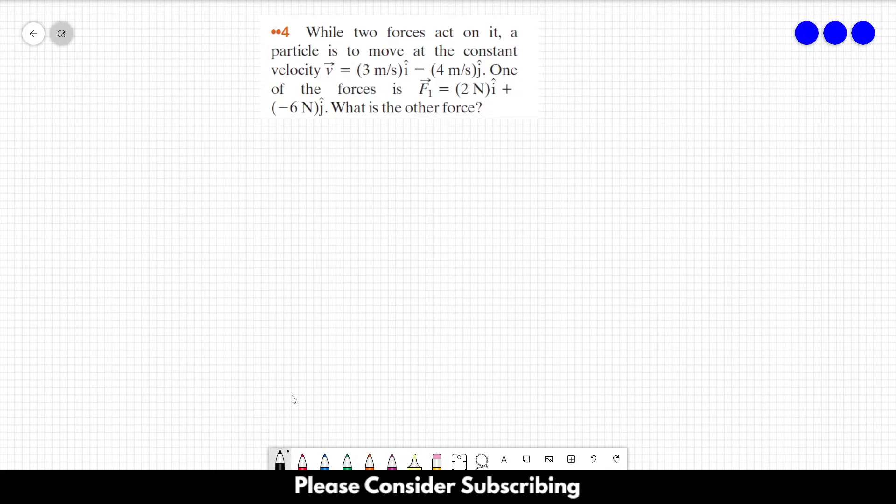Number four. While two forces act on it, a particle is to move at the constant velocity of 3 meters per second in the I direction, minus 4 meters per second in the J direction. One of the forces is F1 equals 2 newtons in the I direction plus minus 6 newtons in the J direction. What is the other force?